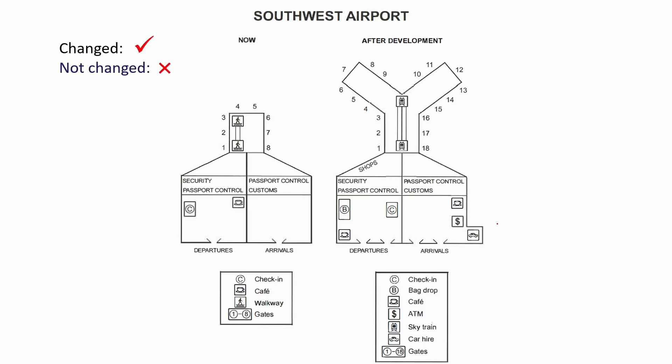Starting with departures — change. Security and passport control — no change. The area after that — change. On the right we have arrivals — change. Passport control and customs — no change. The area after that — no change. And the gates and walkway will also change.